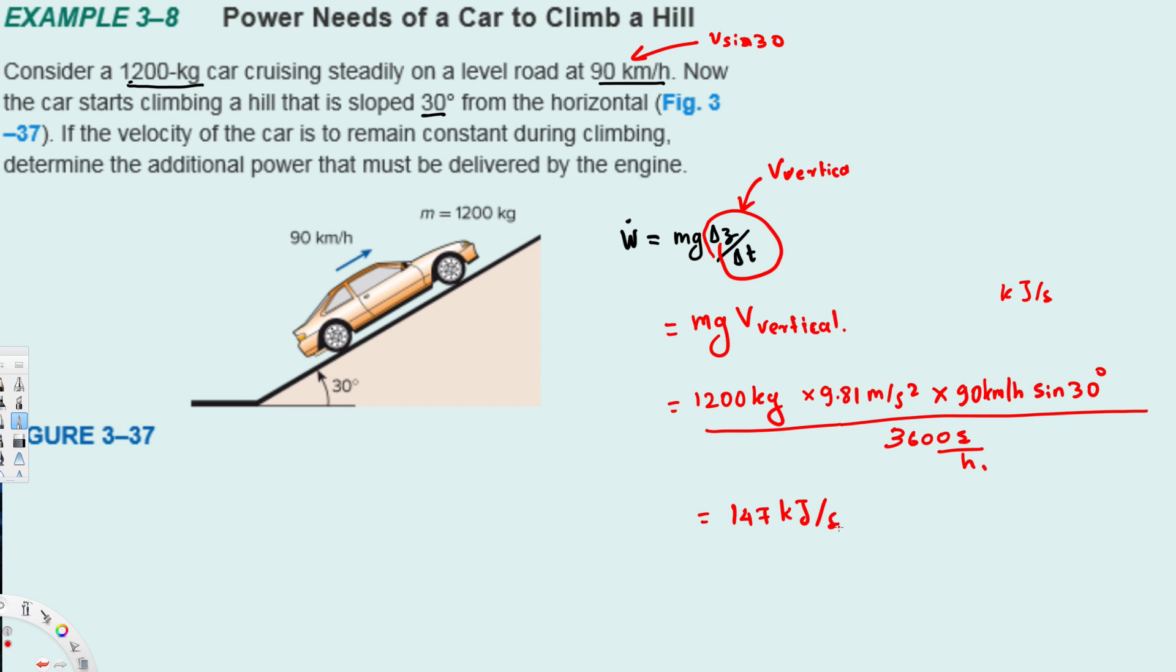We know that joules per second is equal to watts, so we can write this as 147 kilowatts.